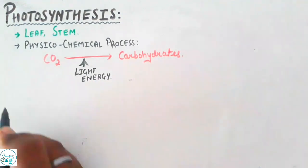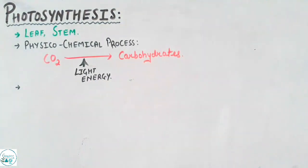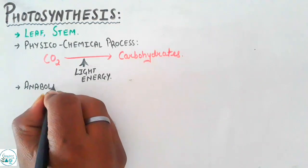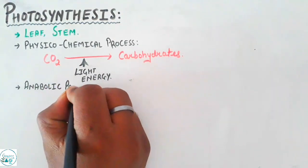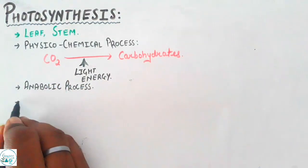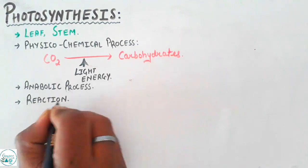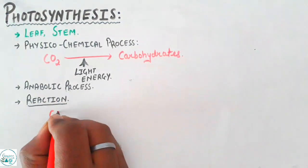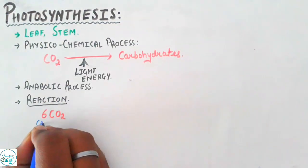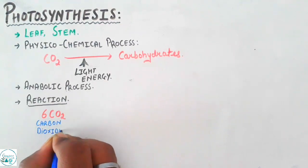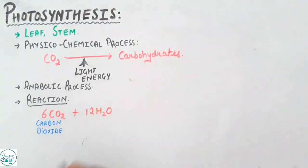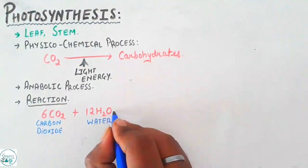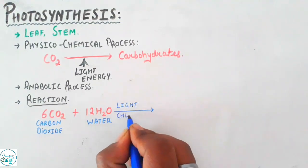Photosynthesis is basically a process which is referred to as anabolic, or you can call it a constructive process, because simpler products are converted into complex form. The reaction of photosynthesis can be summed up as six molecules of carbon dioxide combining with 12 molecules of water, for which the presence of light and chlorophyll is very evident.